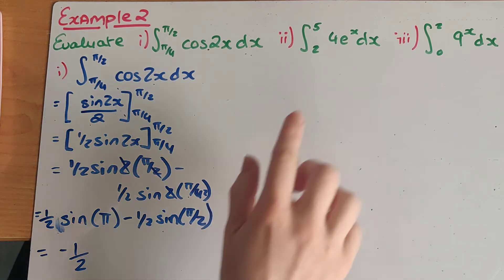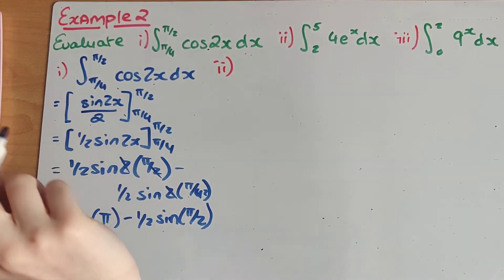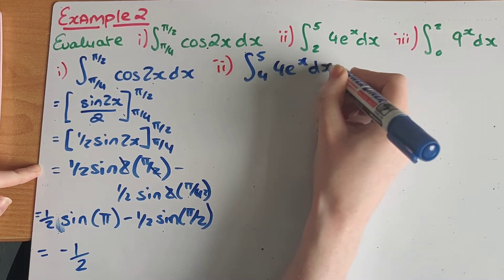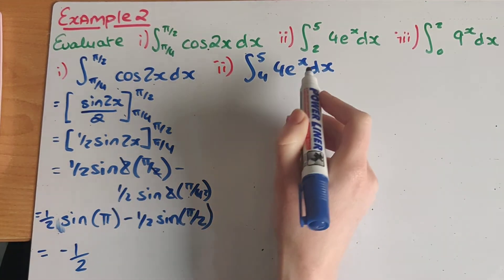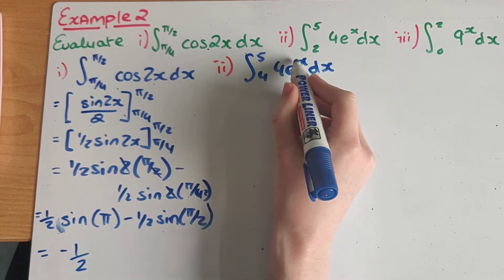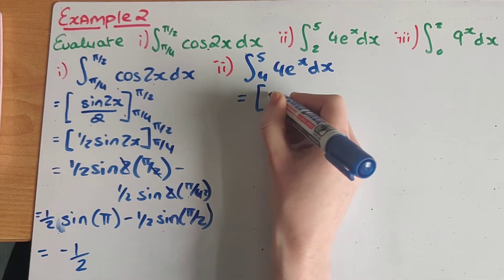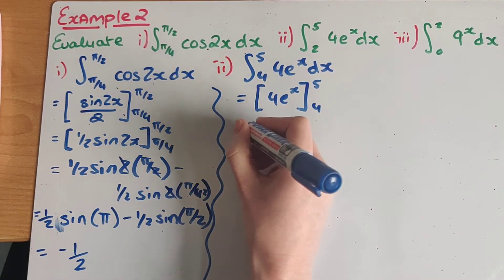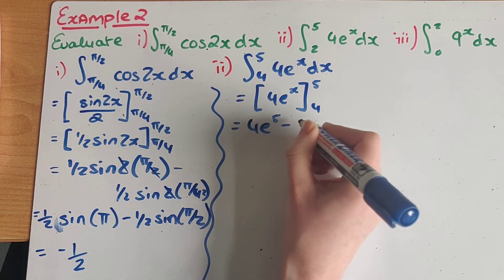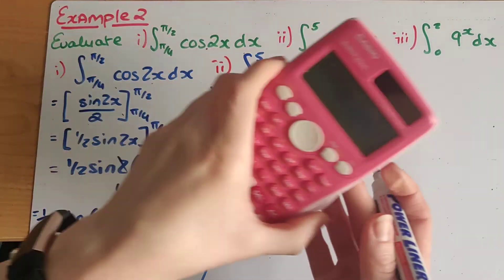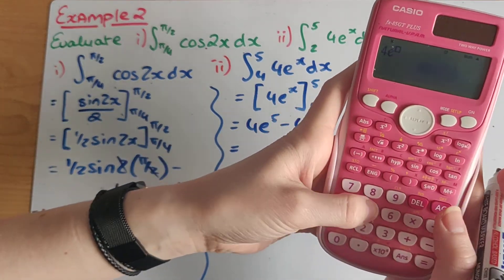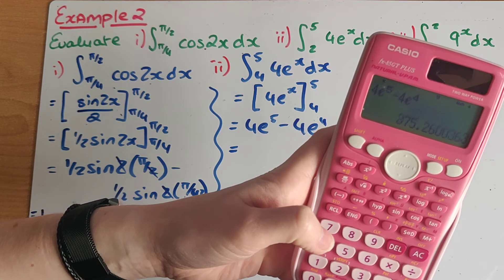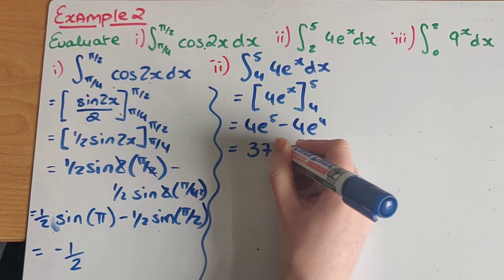The next one is the definite integral — because remember, as soon as they give me two x values, five and four, it's a definite integral — of 4eˣ dx. What I notice here is that e to the power of x, by my rules, if there's no number in front of the x, when I integrate it, it stays the same. So we still have 4eˣ with my limits five and four. My next step is I have 4e⁵ minus 4e⁴. I press shift and ln to get e to the power, and I get 375.26.